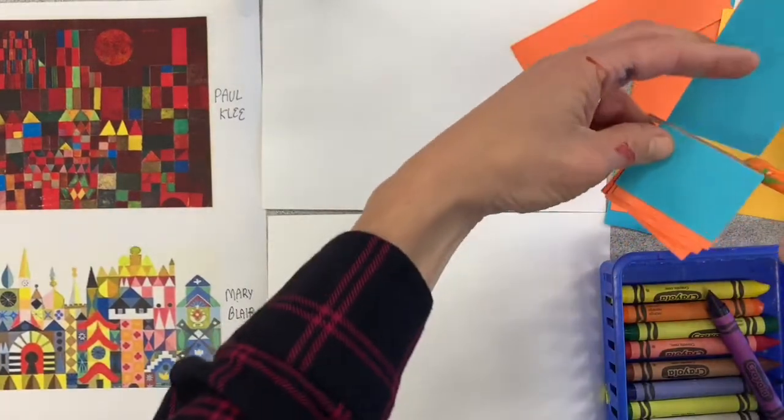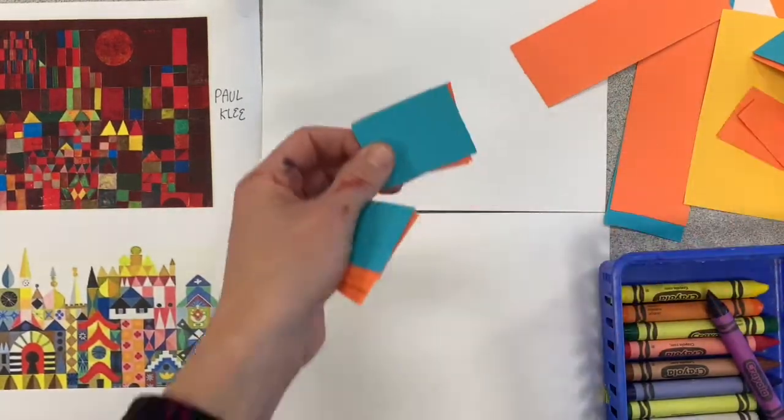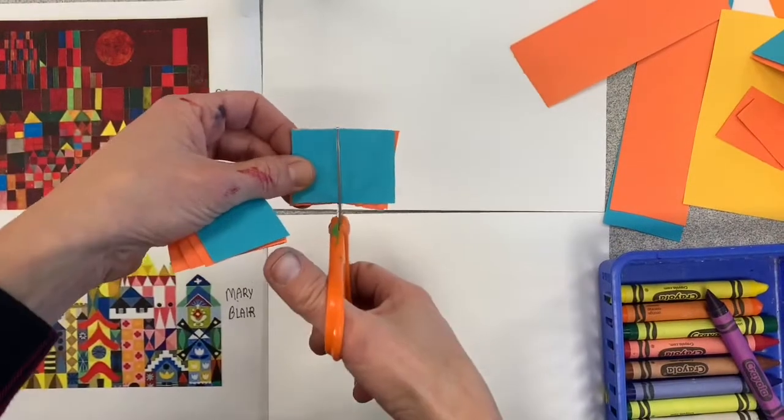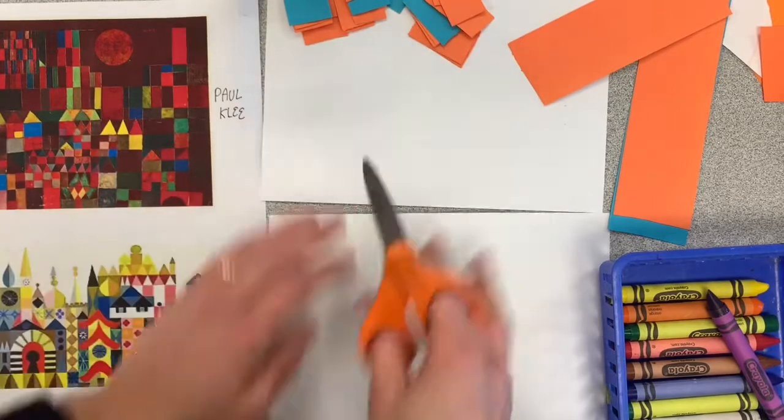So now I'm going to start by cutting some blocks for my castle. I'm going to make rectangles and squares. And to make it a little faster, I'm putting a couple pieces of paper on top of each other. Make yourself a nice little pile of shapes.